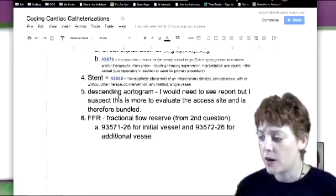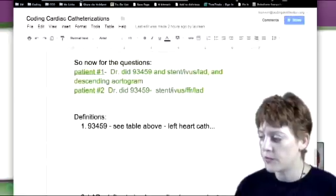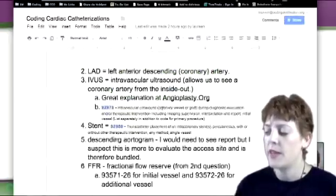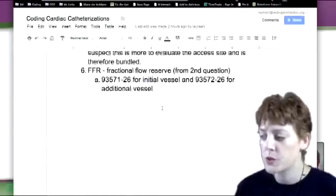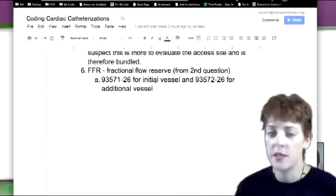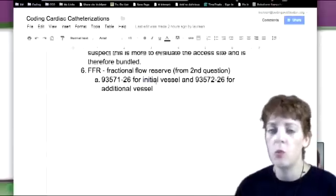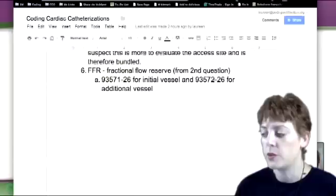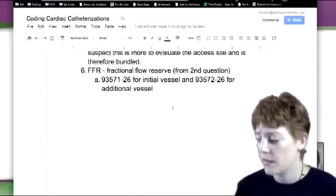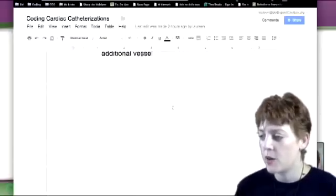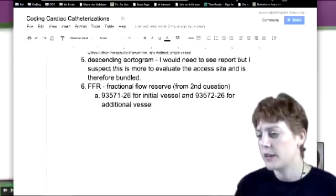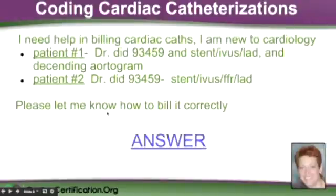And then FFR, that was in the second abbreviated situation here. And that stands for fractional flow reserve. And that code is 93571 for the initial vessel. And if you do more than one in that same session, then there's an add-on code 572. So that's kind of how you break it down. I hope that helps understand the cardiac caths better. I might add to only because someone asked me the other day, what does congenital mean? And it's real simple. It just means you were born with it.